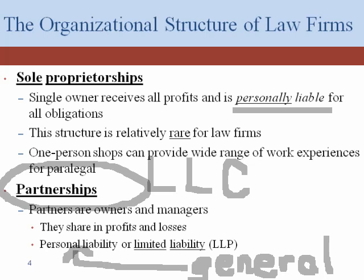Imagine, for example, that I enter into a partnership with Bob and we establish a taco stand. I happen to win the lottery and have $10 million in my bank account. One morning I forget to remove the ice from the front stoop, Sally comes in, slips on the ice, and breaks her leg. It's a bad break, lots of medical bills, and she wants to sue me for that $10 million from the lottery.